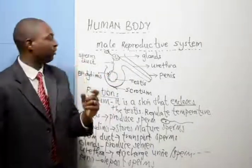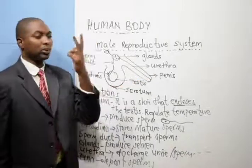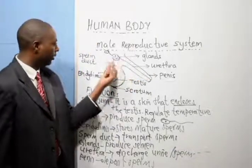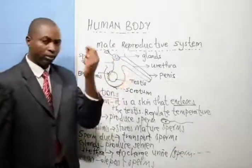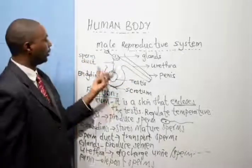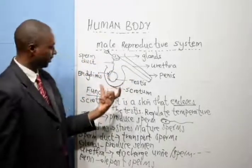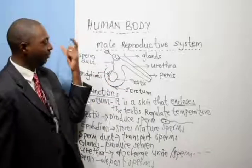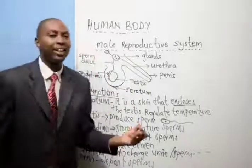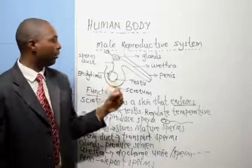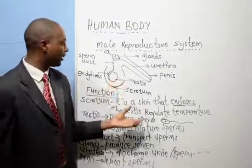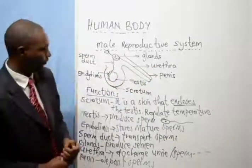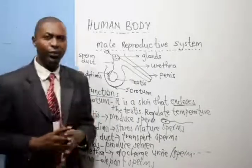One point you have to note: the urethra transports two products — the sperm and the urine. But the sperm duct transports sperm only. There are two testes that produce the male sex cells. And in females, the urethra is not part of the reproductive system, but in men, the urethra is part of the reproductive system. Thank you for viewing.